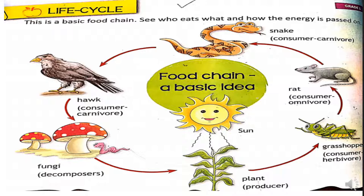After the rat, the rat is eaten by a snake. The snake is also a consumer, but since snake does not eat plants, it is a carnivore — consuming the rat but a carnivore. The snake is then eaten by a hawk. The hawk is a consumer because it eats the snake. After that, when the hawk dies, fungi and other decomposers break down the dead hawk into nutrients which are released into the soil. These nutrients then help the plant to grow.